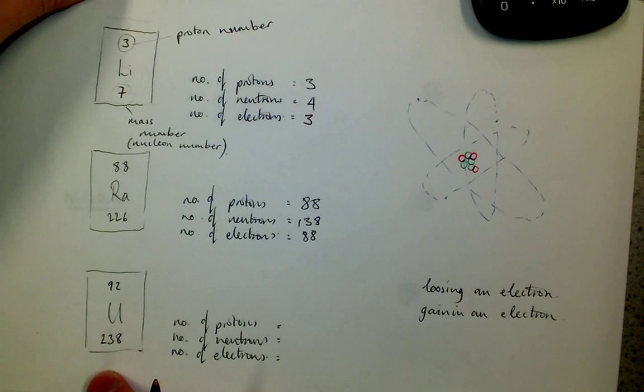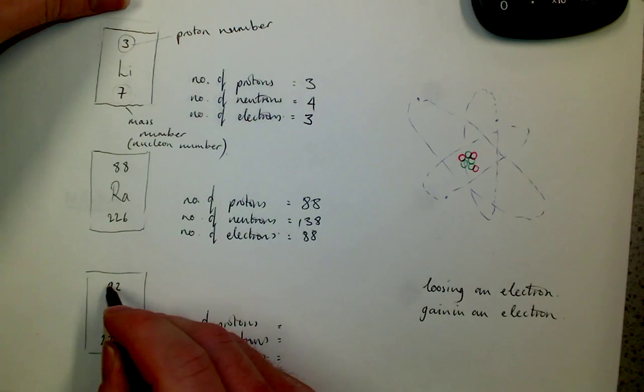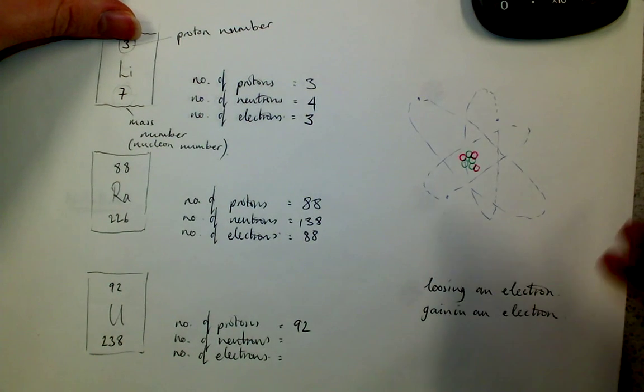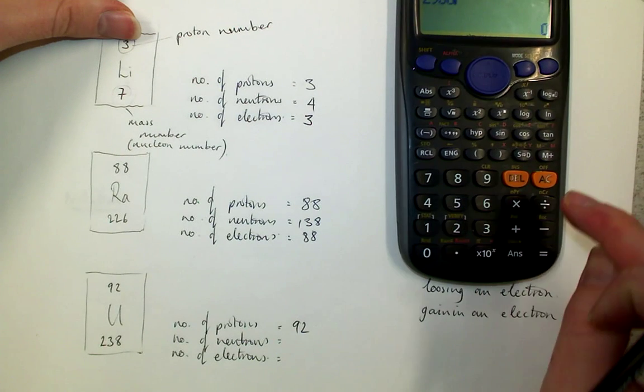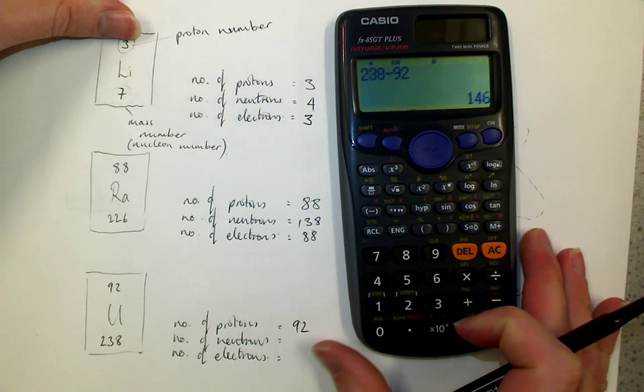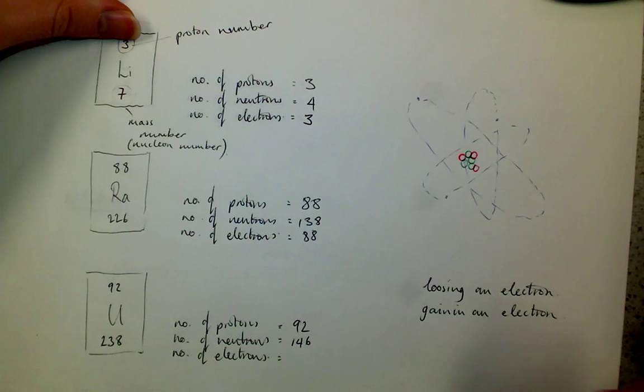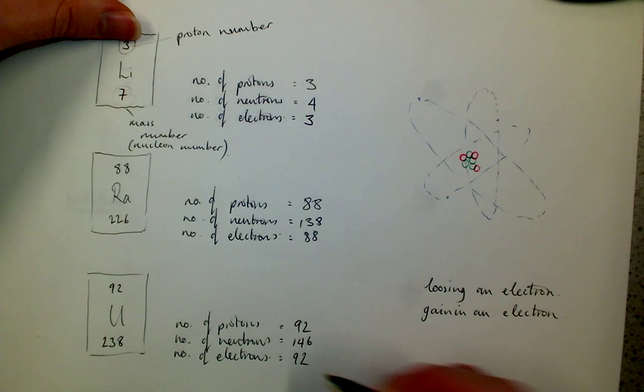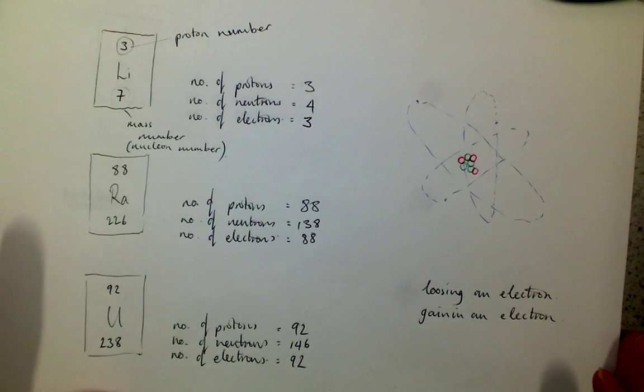Here's one of the main other radioactive elements that we'll be talking about. Proton number? How many of them? 92. 238. Oh, did I not write? 238 take away 92 gives me 146 neutrons. Number of electrons, if it's an atom, is equal to the number of protons. So, well, what happens then when we lose or we gain electrons?